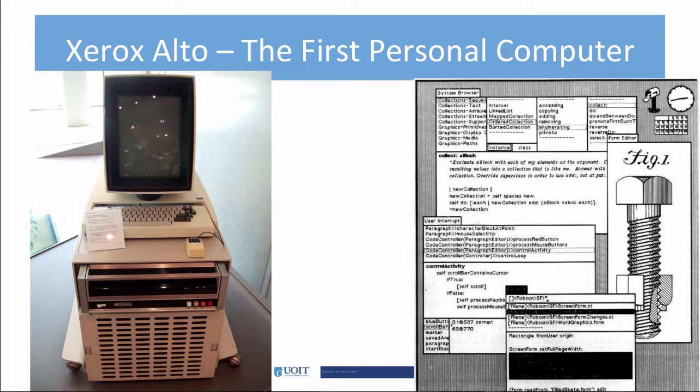a detachable keyboard, a three-button mouse, and a 2.5 megabyte hard drive, housed in a processing unit the size of a small refrigerator. Alto's programming also allowed for WYSIWYG, which is an acronym for What You See Is What You Get. This is the first computer to allow users to see, on the computer screen, what a document will look like when it's printed.